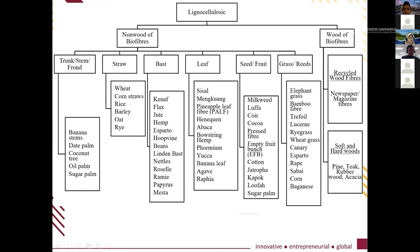Plant-based natural fiber is called lignocellulose, also known as biofiber. There are two types of lignocellulose: one from wood and another from non-wood. Wood sources include softwood and hardwood such as pine, rubber wood, and so on. Non-wood sources can come from trunk, stem, frond, straw, bast, leaf, seed, fruit, grass, and reed.